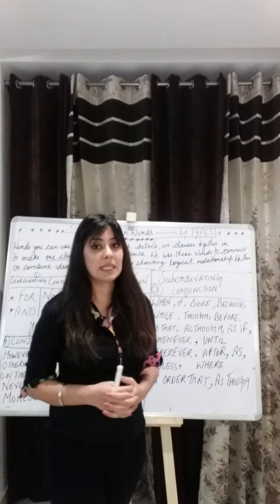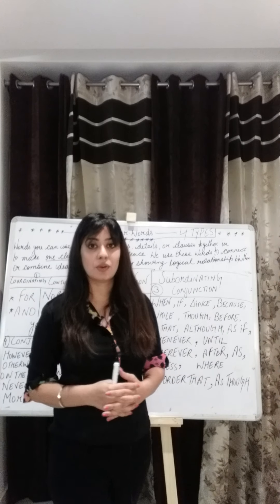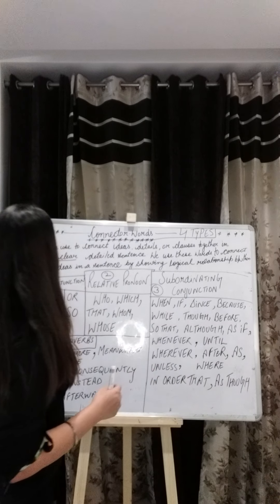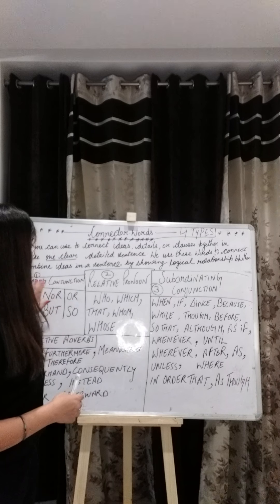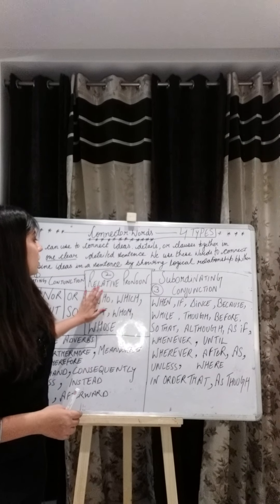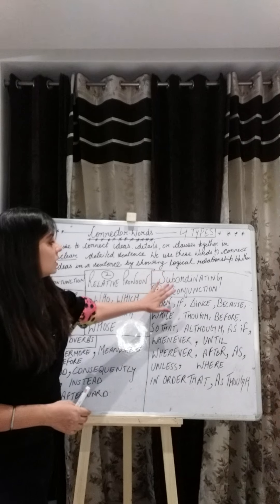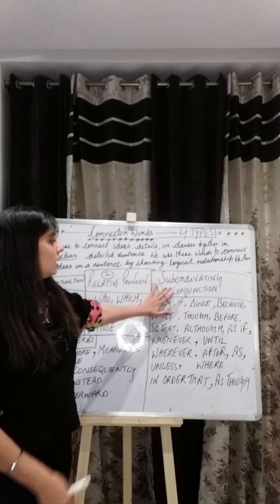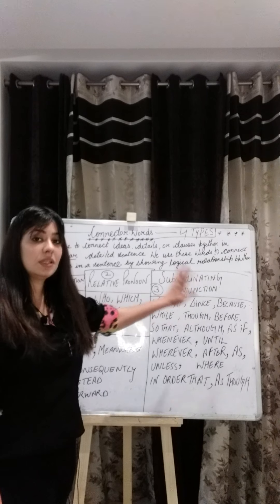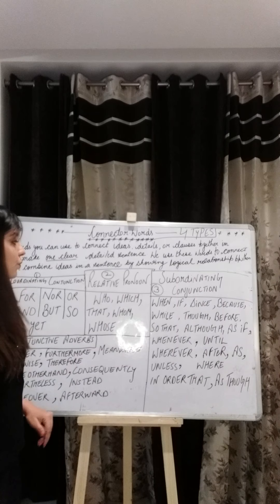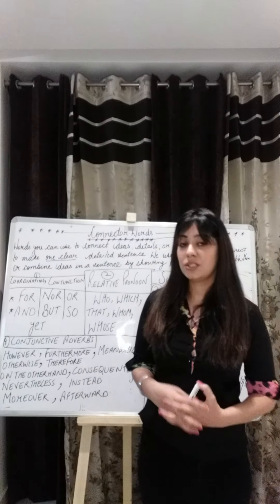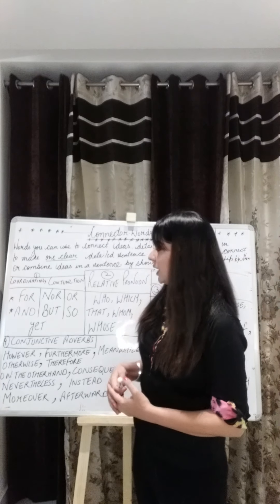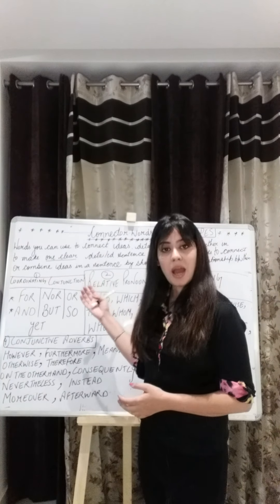So basically, there are four types of connector words. The first one is Coordinating Conjunction. The second is Relative Pronoun. The third one is Subordinating Conjunction. And the fourth one is Conjunctive Adverbs. These are our four types of connector words which we need to understand very well.